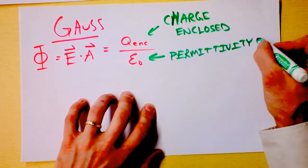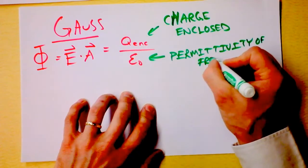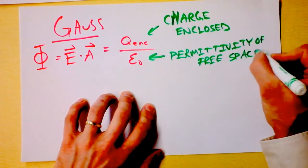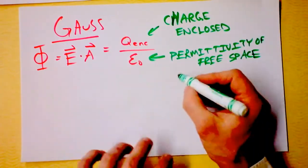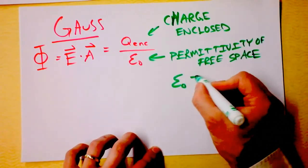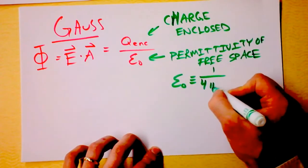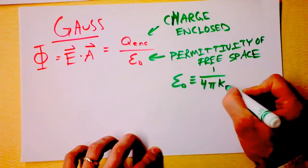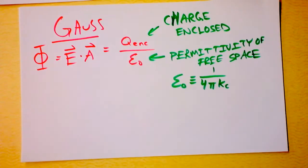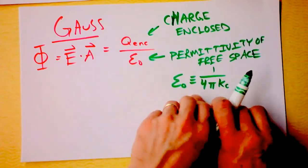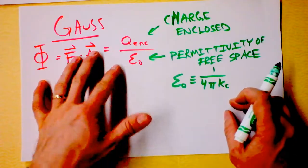Epsilon naught is the permittivity of free space. It has a cool property: epsilon naught is defined to be one over four pi times Coulomb's constant, which makes a lot of sense in electricity. So this is just another way of defining things, and now I want to do some examples of Gauss's law.